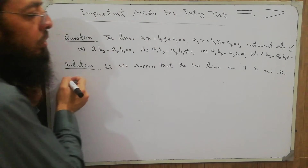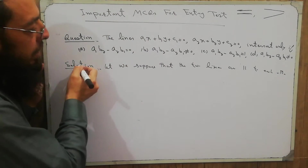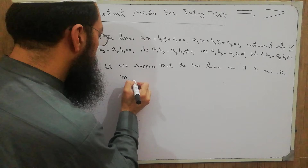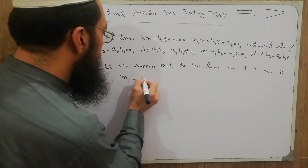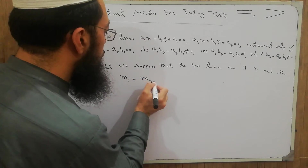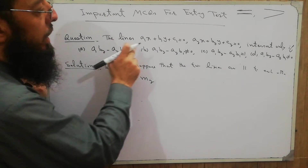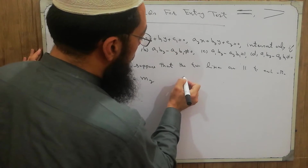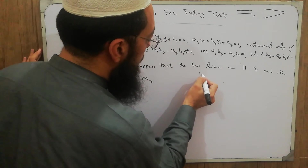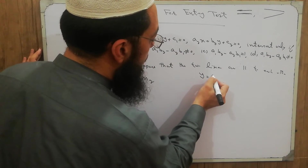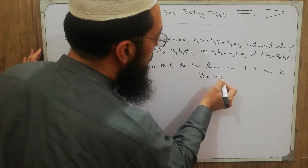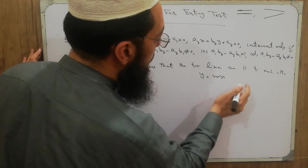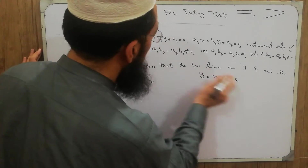We know that when two lines are parallel to each other, their slopes will be equal. So first I find the slope of these two lines by writing them in slope-intercept form: y = mx + c.